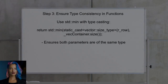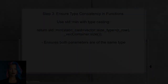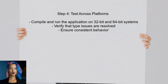When using functions like std::min or std::max, ensure that both parameters are of the same type. This can be achieved by casting the parameters to vector::size_type. Finally, test the application on both 32-bit and 64-bit systems to confirm that the changes resolve the issues. This will help ensure that the application behaves consistently across platforms.